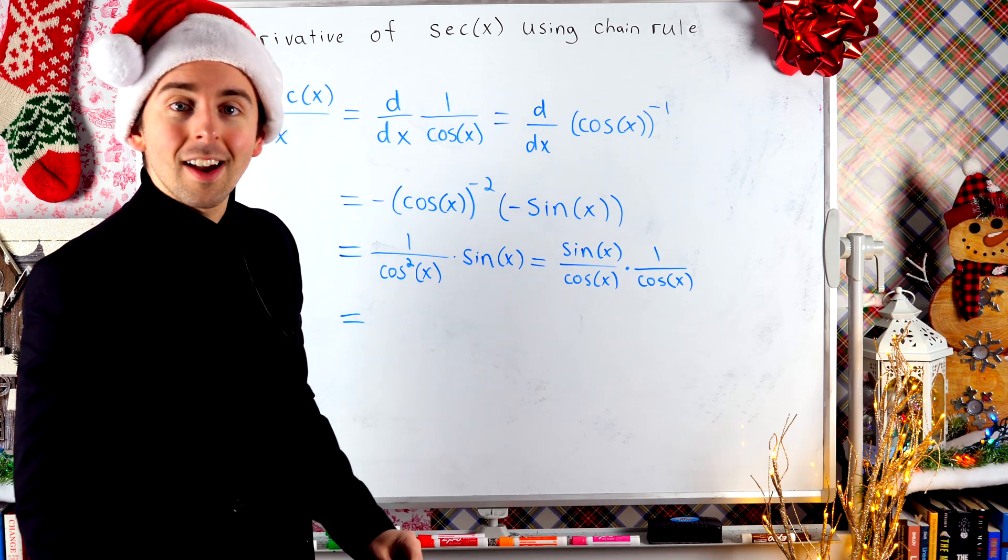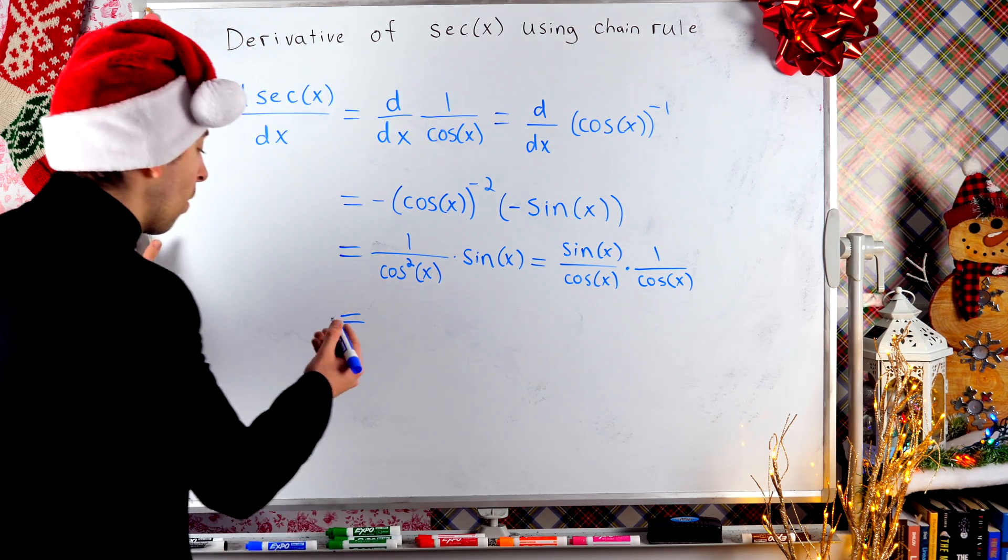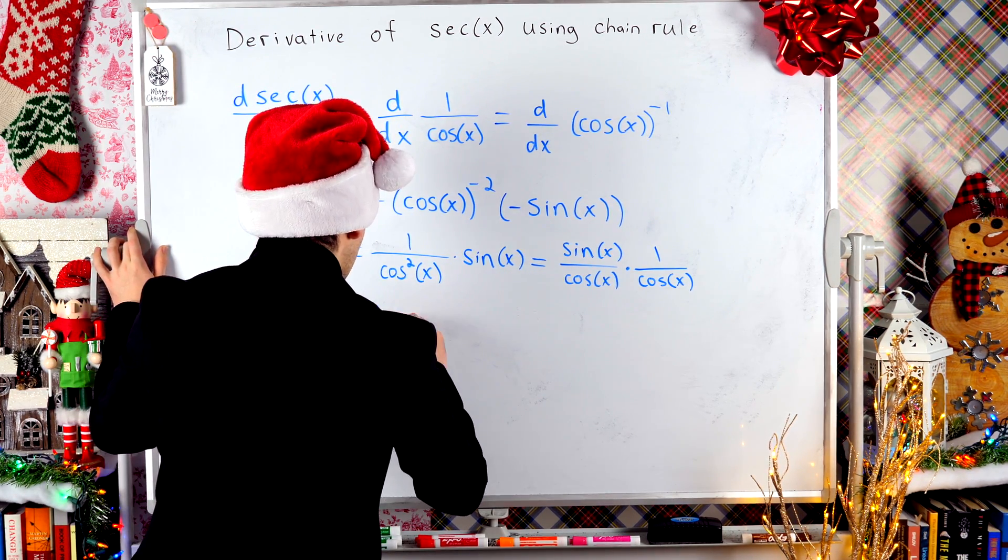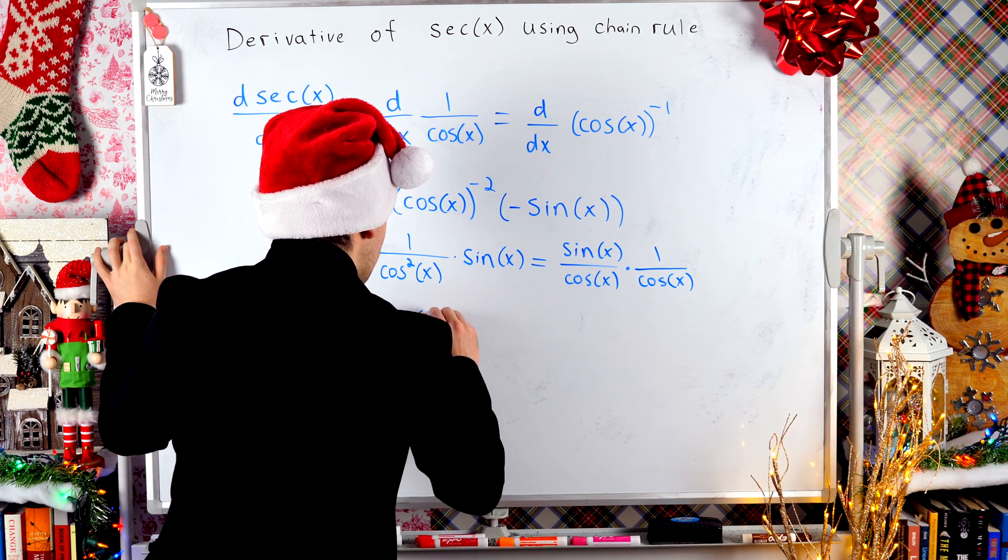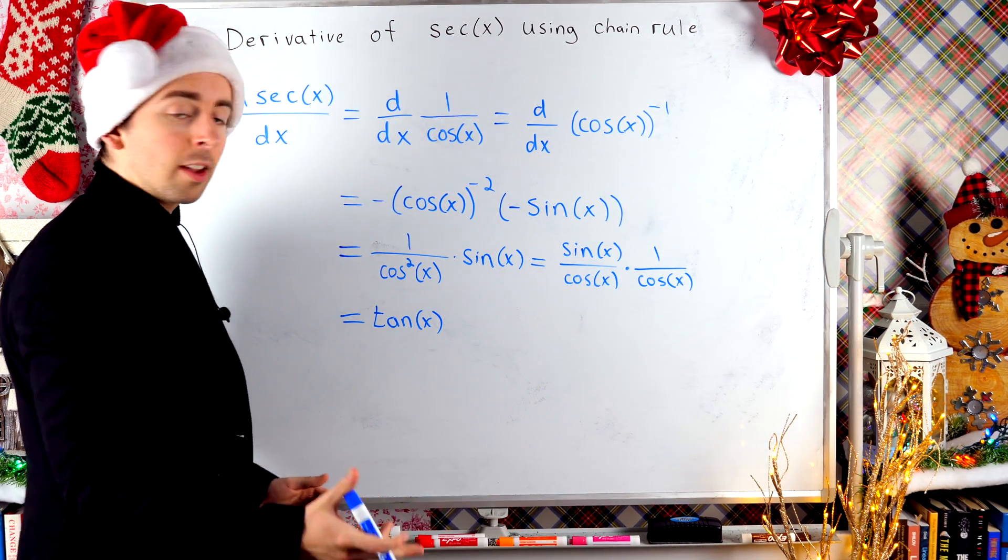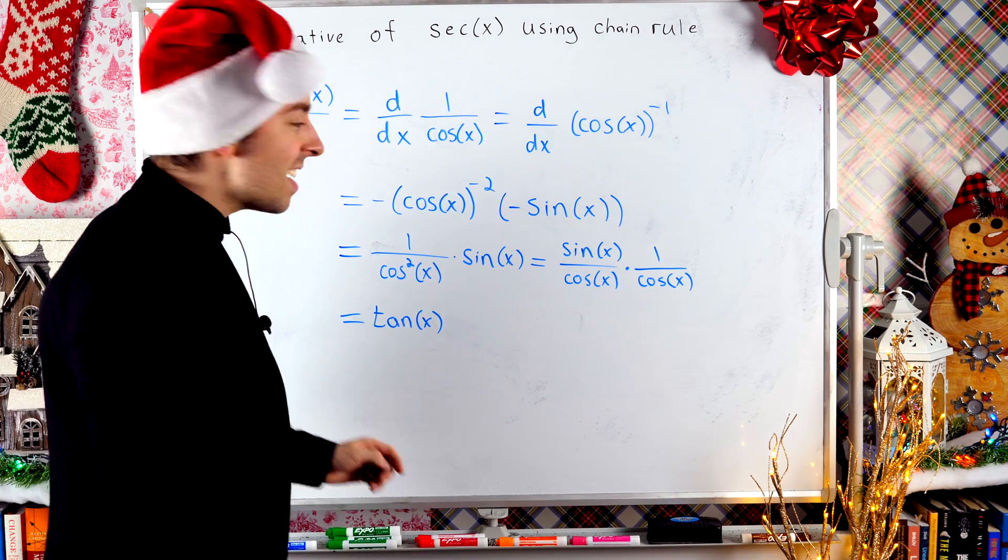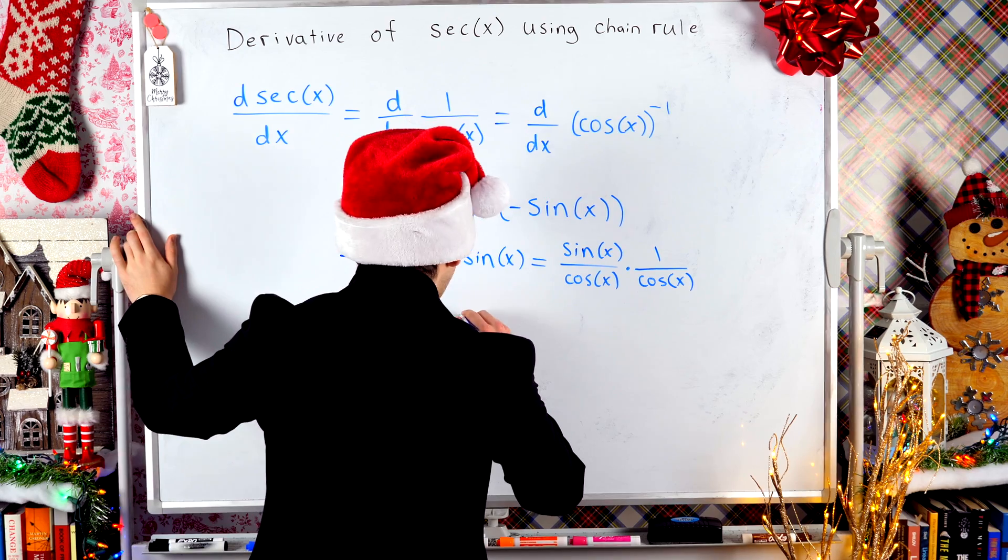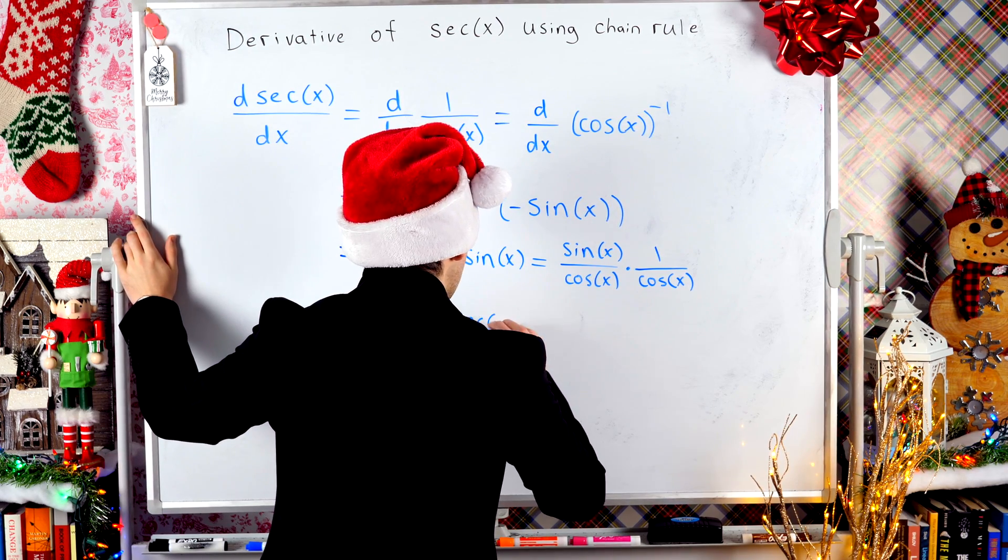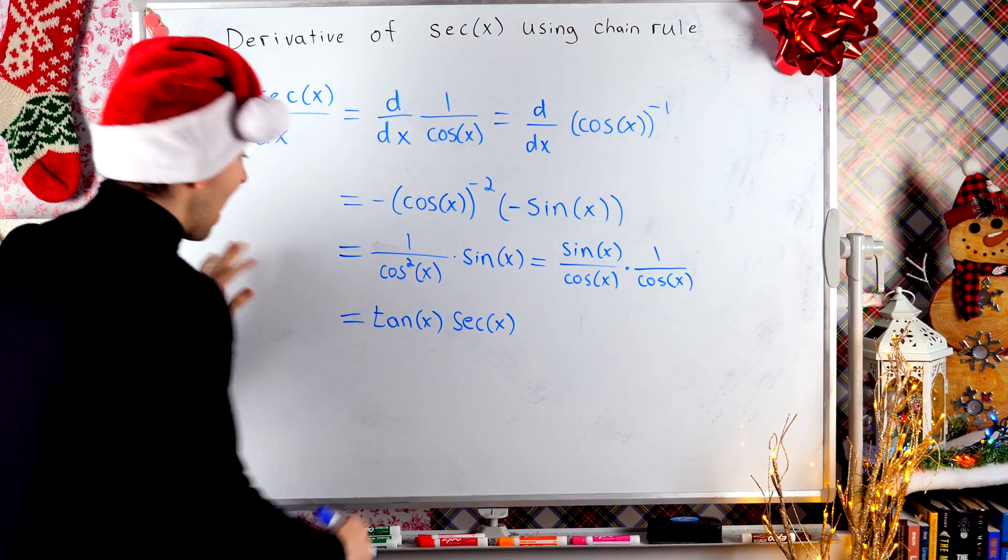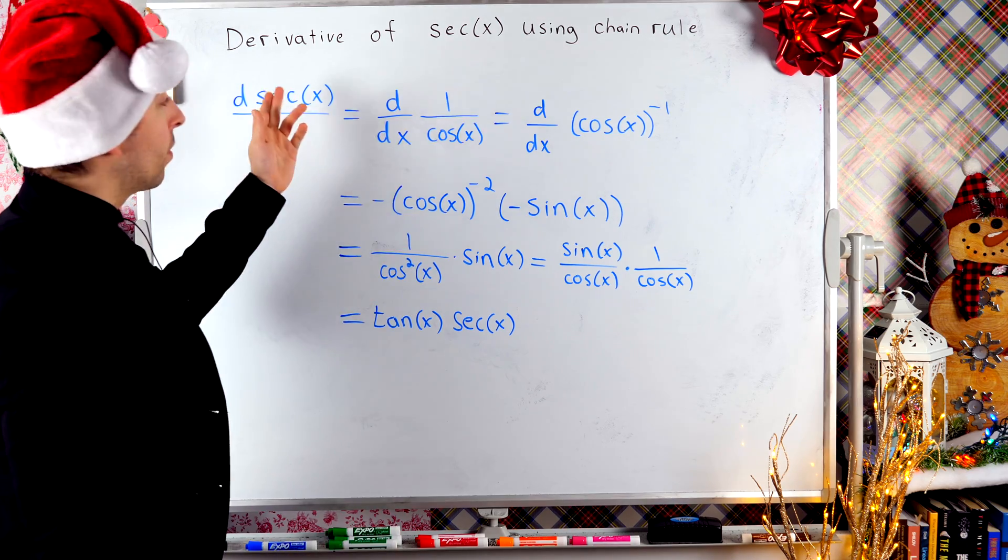Sine over cosine is tangent. So I've got tangent of x, and then one over cosine. By definition, like we said here at the start, one over cosine is secant. So this is tangent of x times secant of x. And that is the derivative of secant.